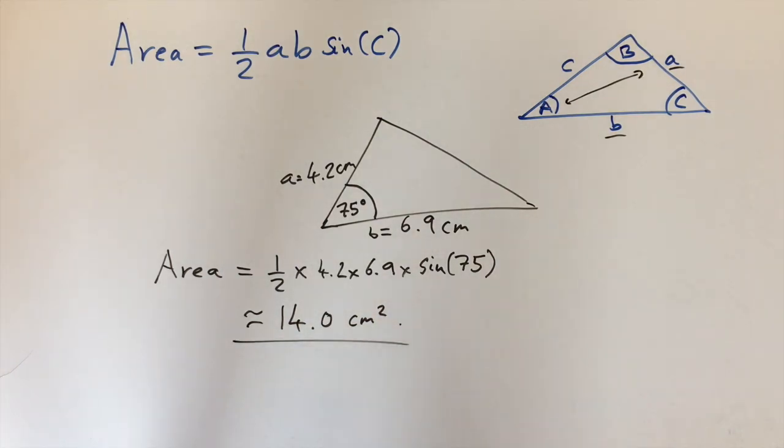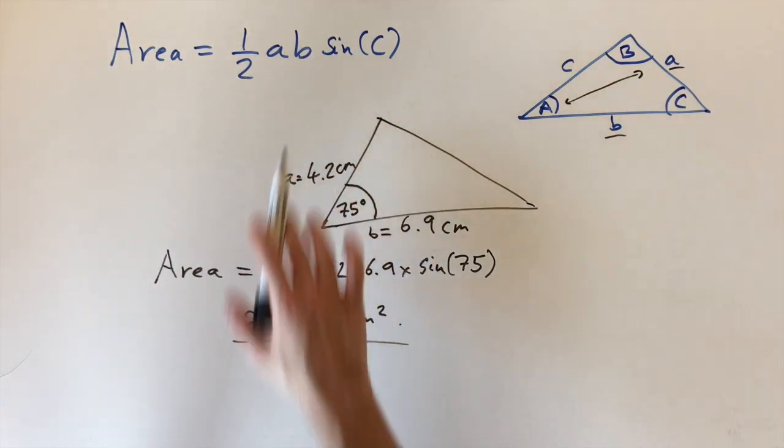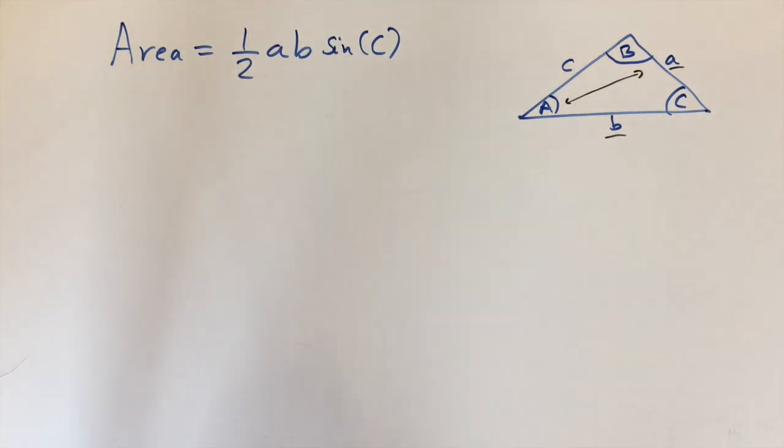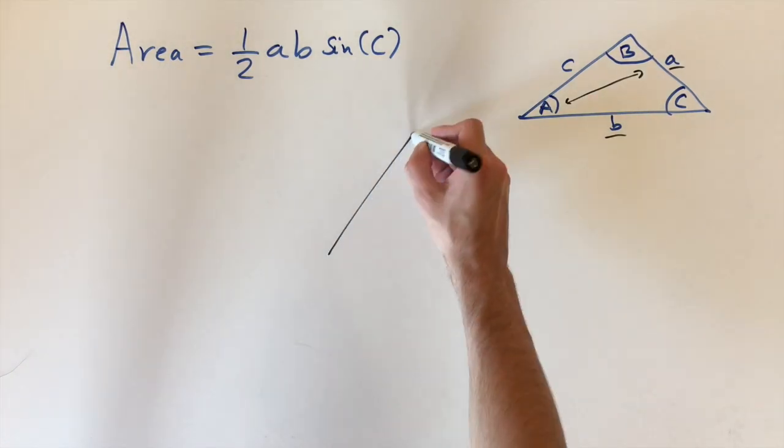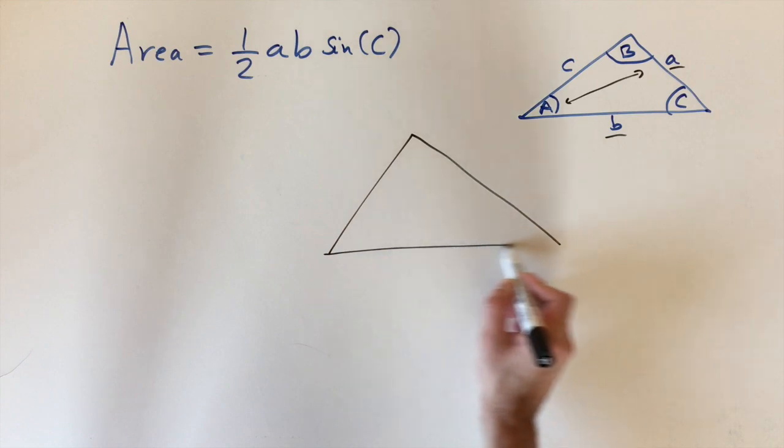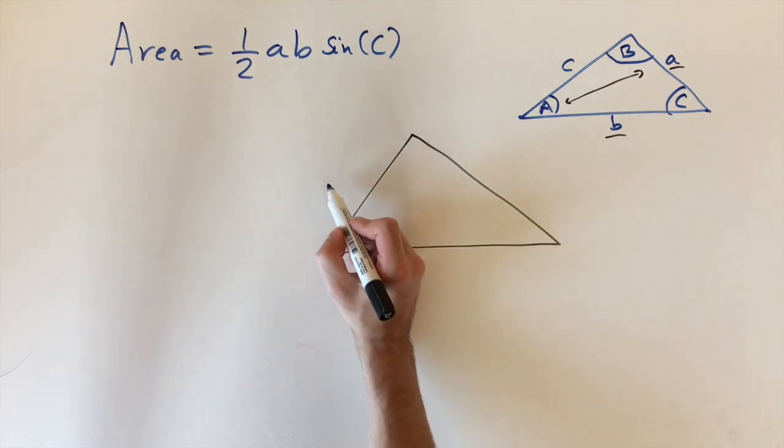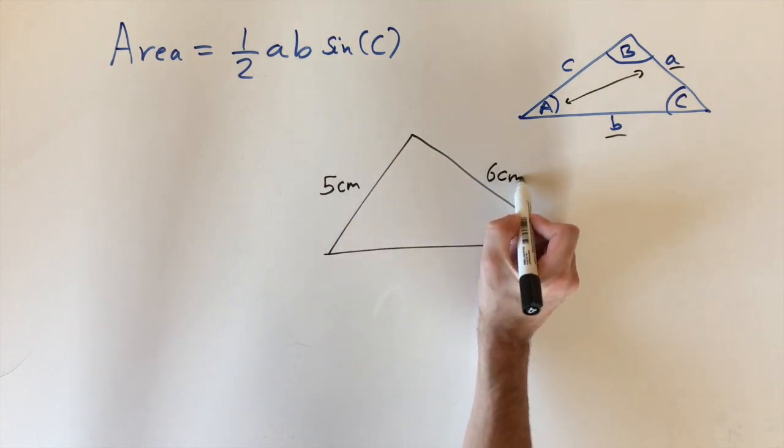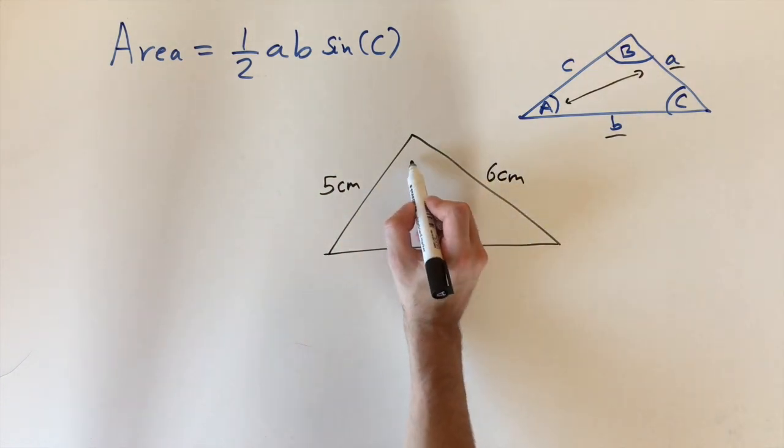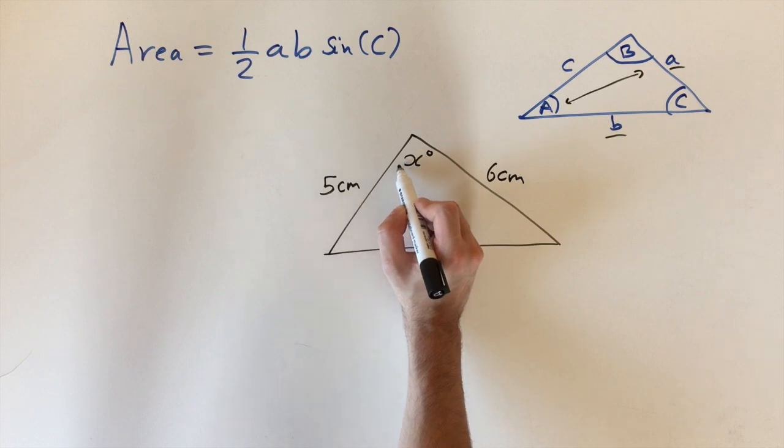It's a really powerful formula because it's quite easy to use. Now we're going to look at an example where instead of finding the area, we're given the area and need to find other information about the triangle. For this example, this length is 5 centimeters, this one is 6 centimeters, and this angle is x degrees, which we don't know.